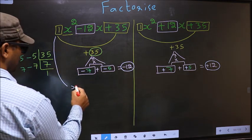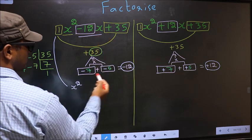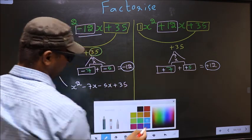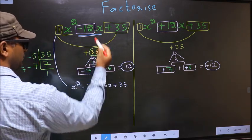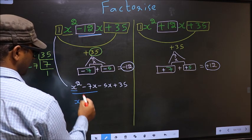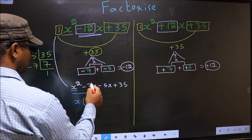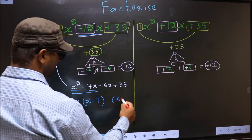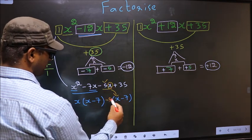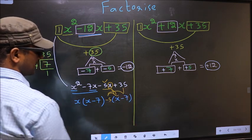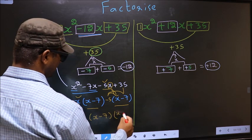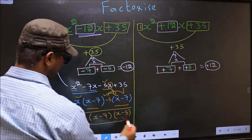Now change this to x squared. In place of minus 12x, we should write minus 7x minus 5x plus 35. From these two terms, what can be taken out common? x. So here we get x — taking x out — so we get x minus 7. Whatever we got here, here also we should get the same thing. From this, x has gone inside, so outside you are left with minus 5. Now take out x minus 7 common, so here you have x and here you have minus 5. This is the answer: (x minus 7)(x minus 5).